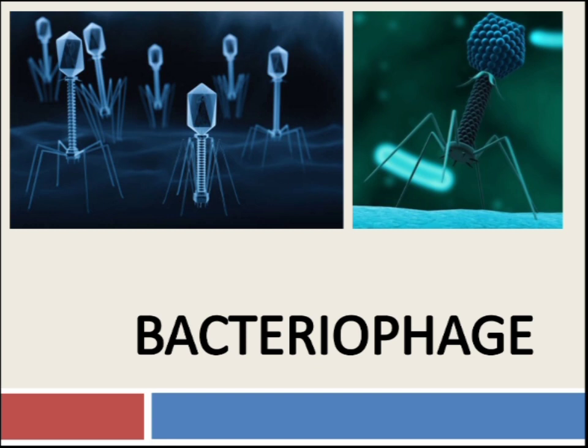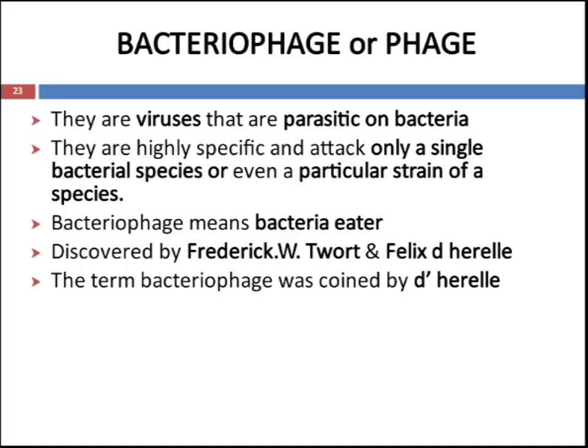Bacteriophage is a complex virus. Do not confuse it with bacteria — these are viruses that parasitize bacteria. The host cell of this complex virus is bacteria, which is why it is known as bacteriophage. They are highly specific in their attack: only a single bacterial species or even a particular strain of a species will be selected. Bacteriophage means 'bacteria eater' and it was discovered by Frederick W. Twort and Philippe D'Hérelle. The term bacteriophage was coined by D'Hérelle.